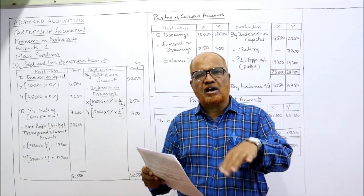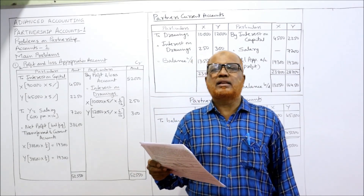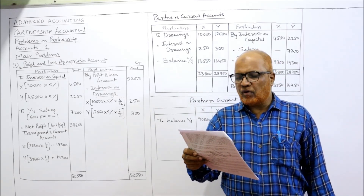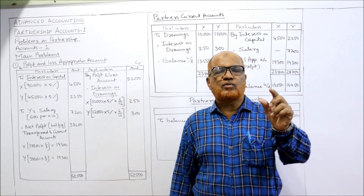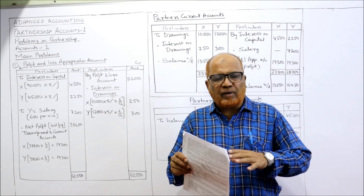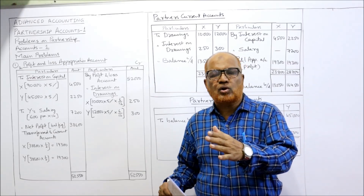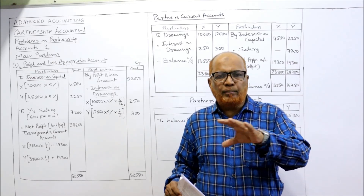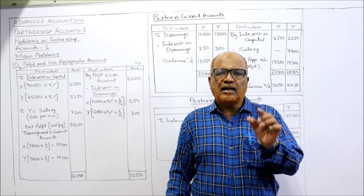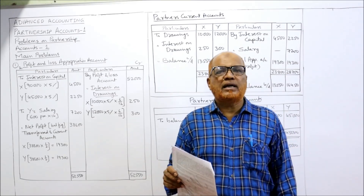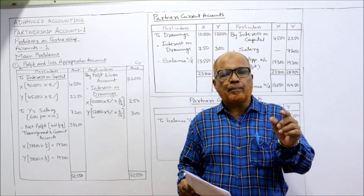During the year X withdrew 10,000 and Y withdrew 12,000 — these are the drawings. Profit before adjustment amounted to 52,000; this is the profit from the profit and loss account. From this 52,000 we have to make adjustments for interest on capital, interest on drawings, and salary of the partner. After making these adjustments, whatever profit remains is called the divisible profit, and that will be distributed equally among the partners.